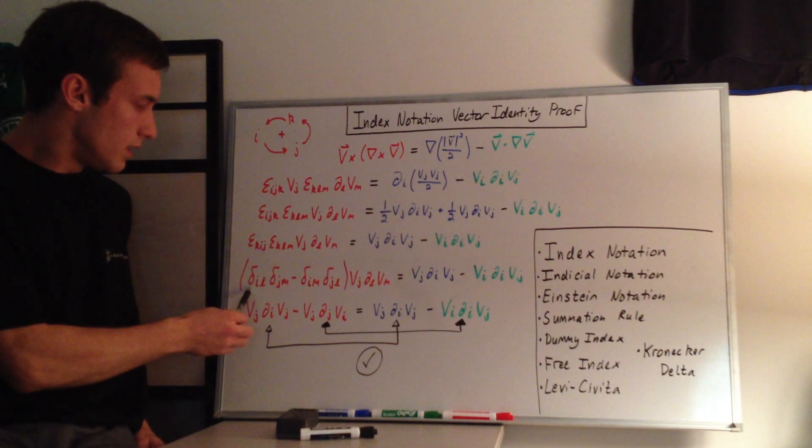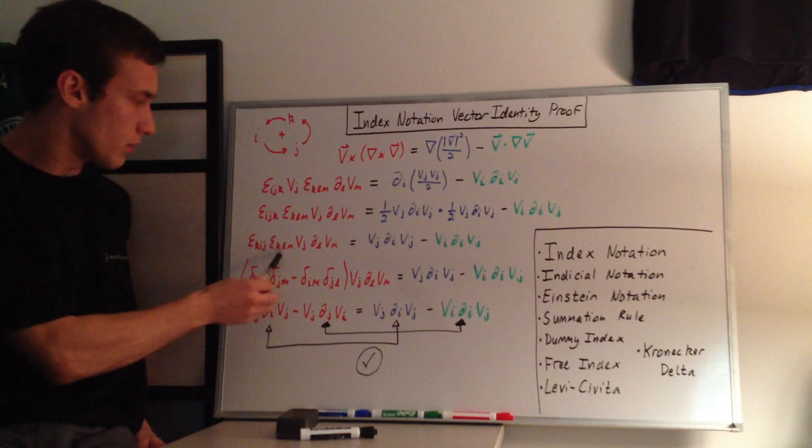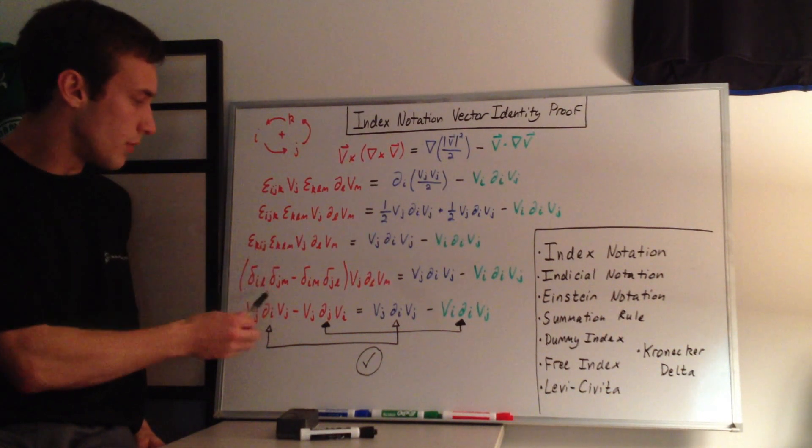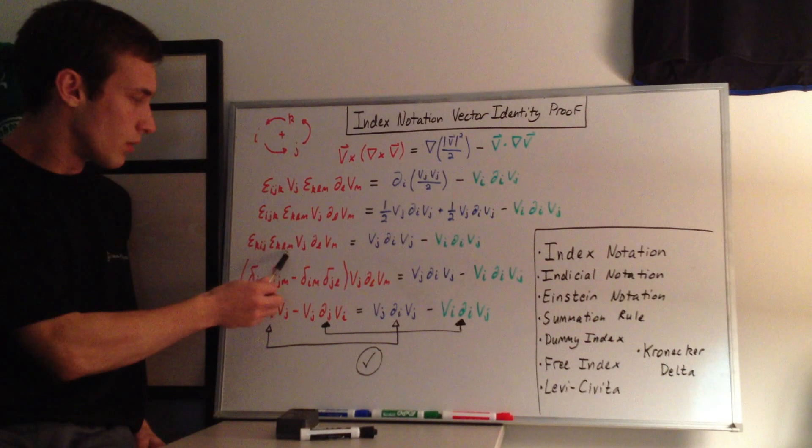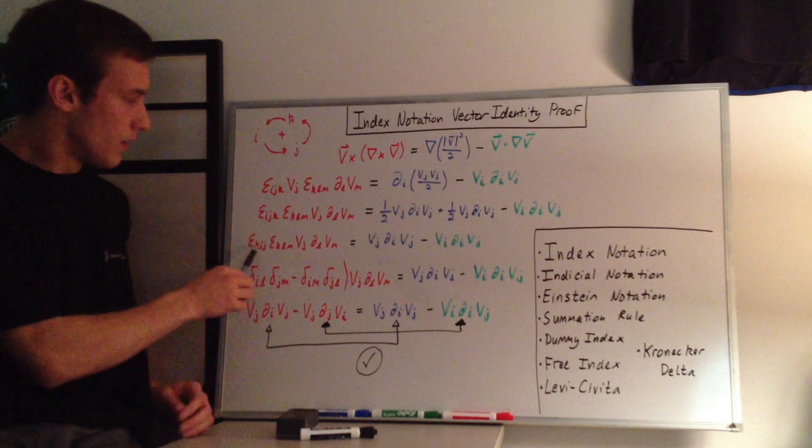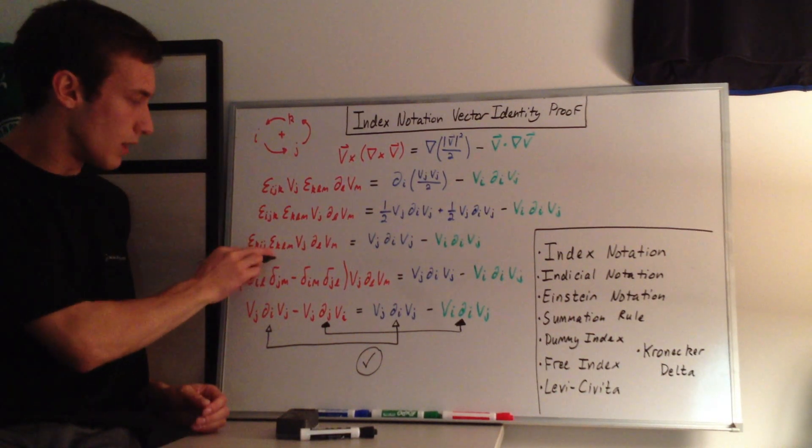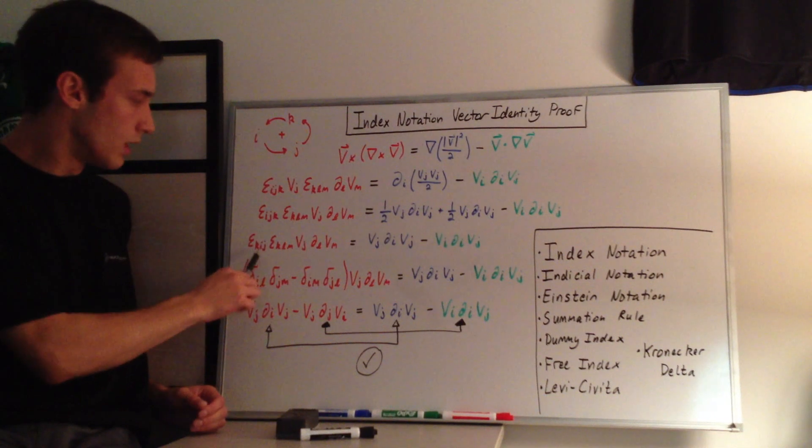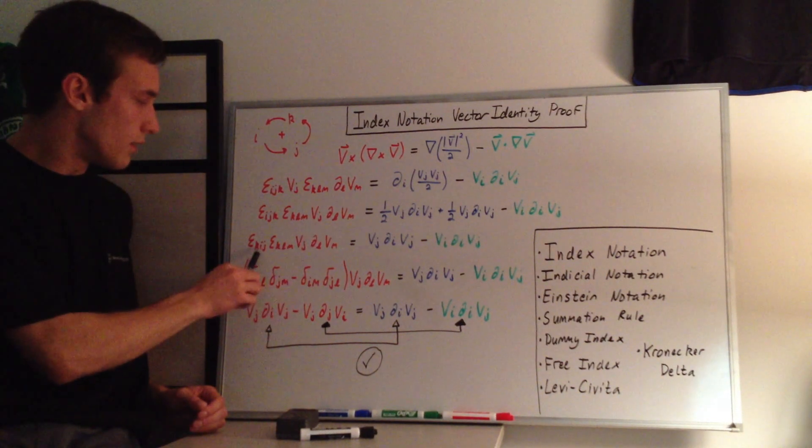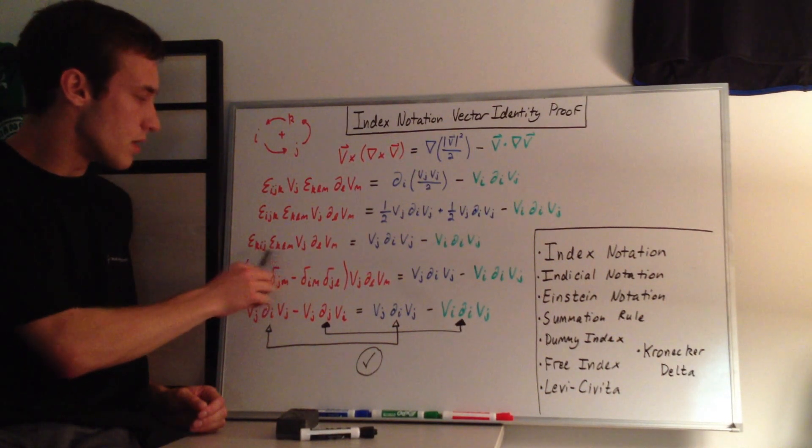So we have a delta, and then we're going to take the first one here and the first one here, so i, l, times delta, second one here, second one here. Well, it's the second one not including k. We're not including k now since they're both the same index. So the first one, so i, l, that's here, i, l. And the second one's j, m, j, m. And then that's minus delta, first one here, second one here now, so i, m, delta, second one here, first one here, so j, l.